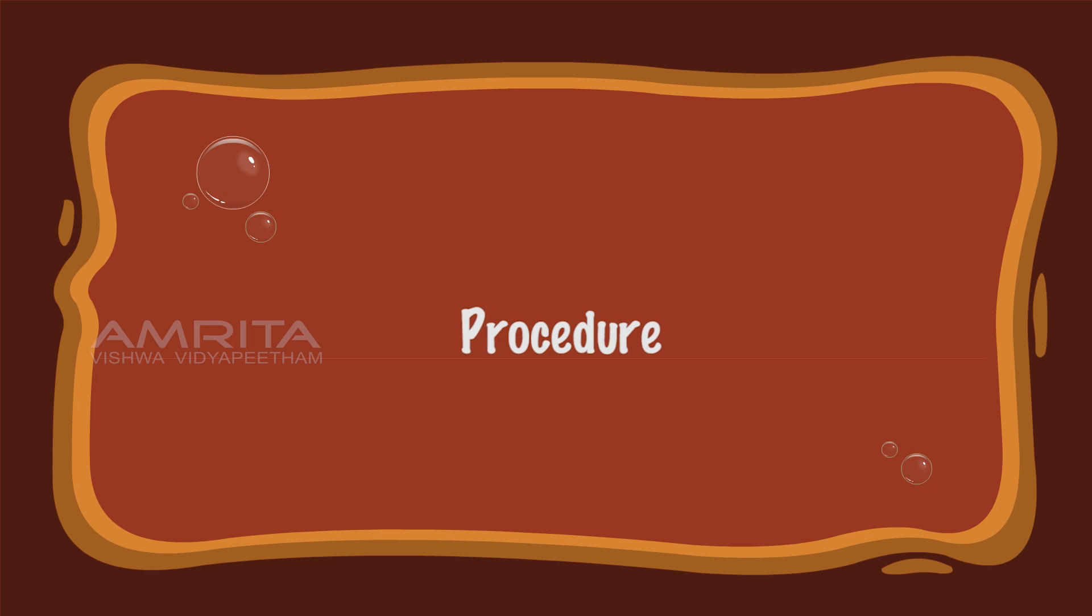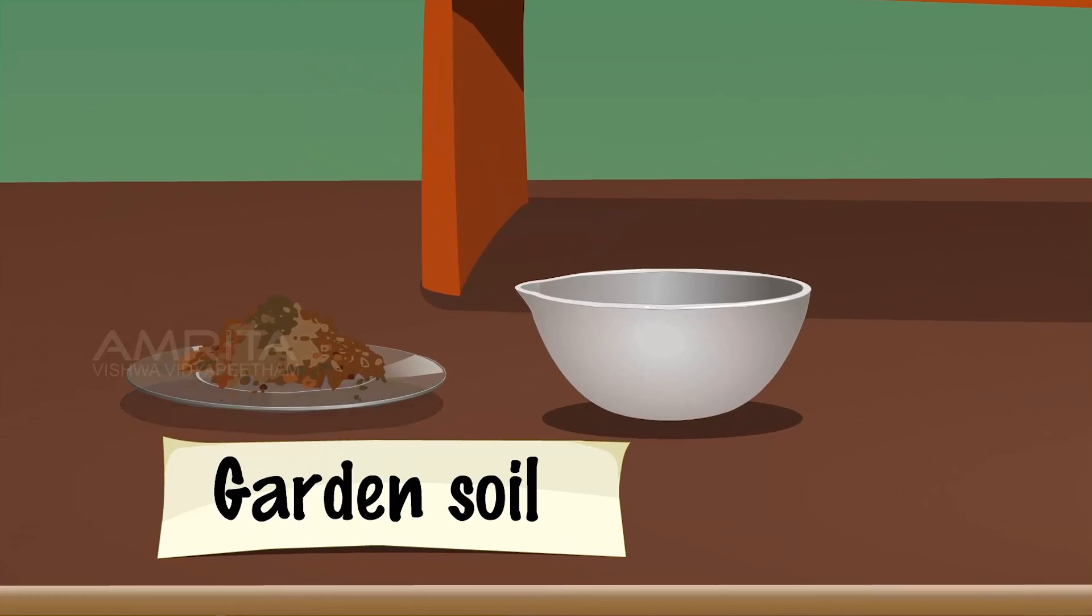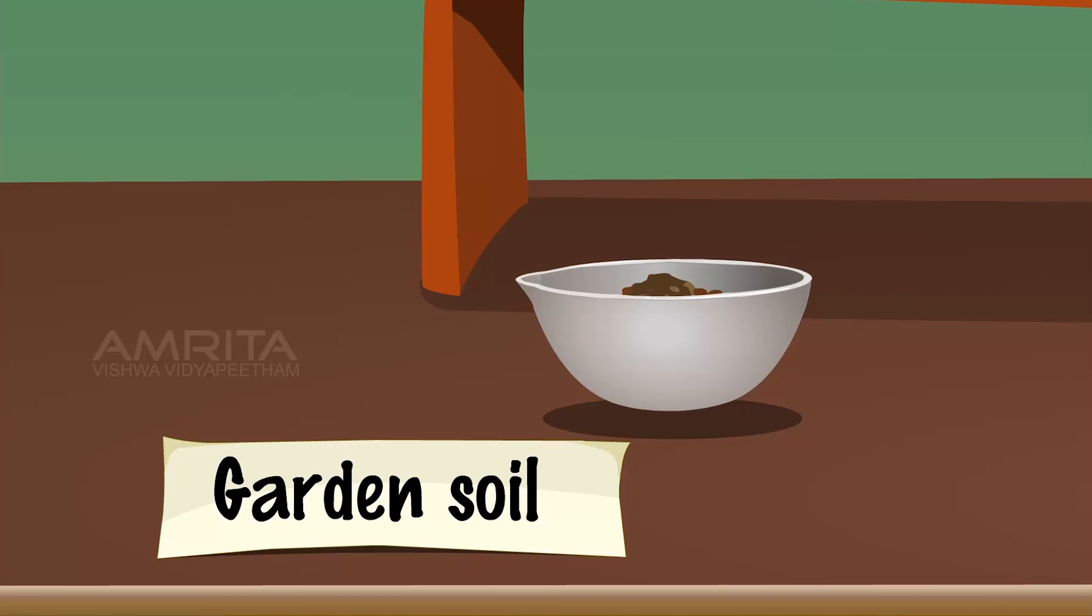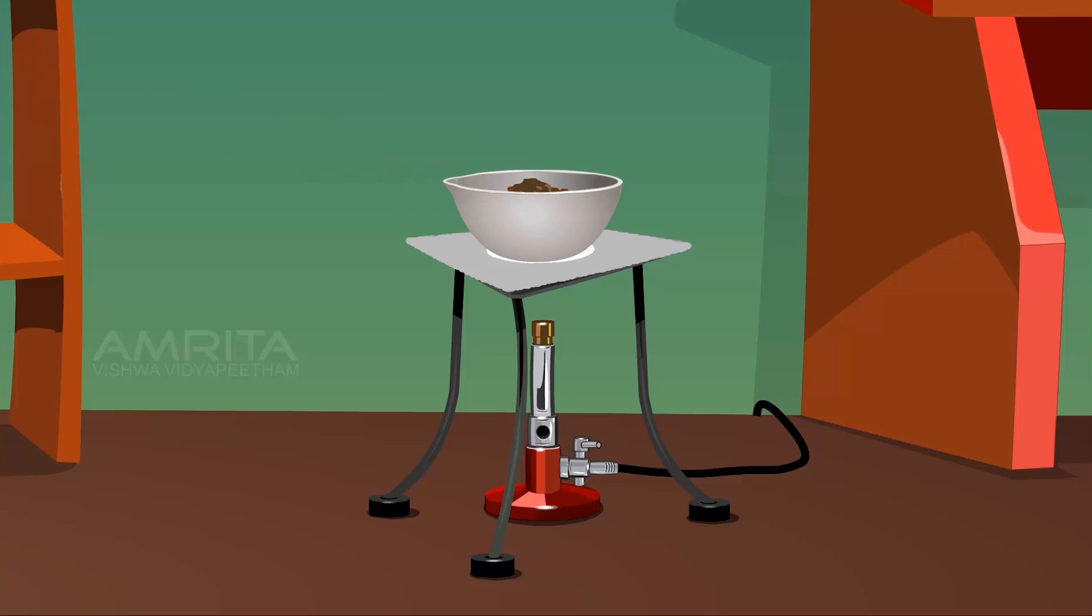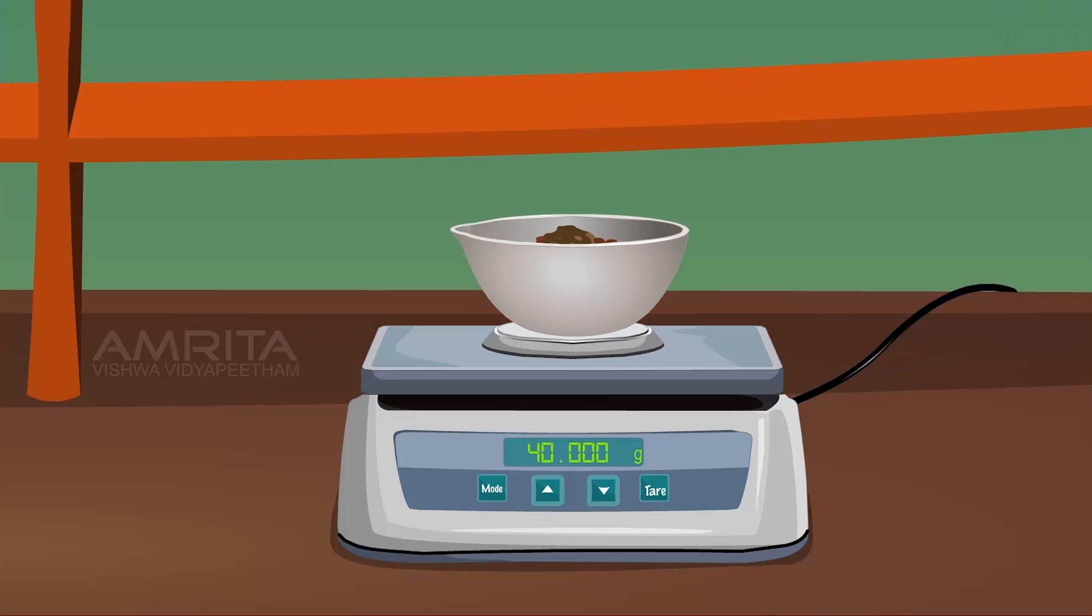Procedure: Take watch glass containing garden soil and put it into a crucible. Weigh the crucible with soil sample on a weighing balance. Take crucible and place it over the Bunsen burner. Heat the soil for some time till the soil becomes dry. Weigh the crucible again to record the weight of dry soil.